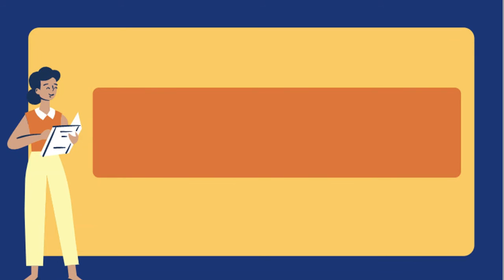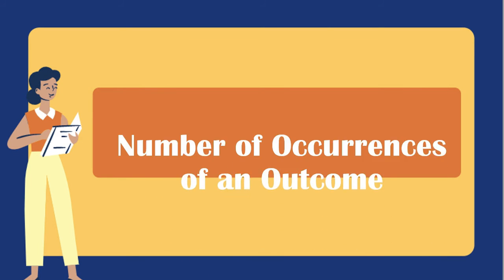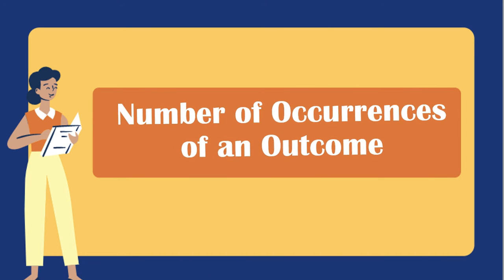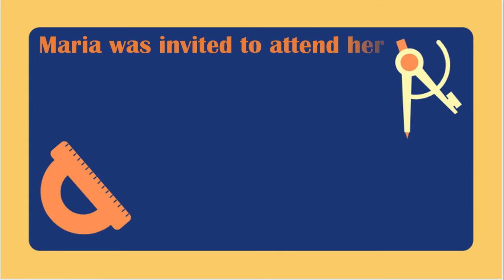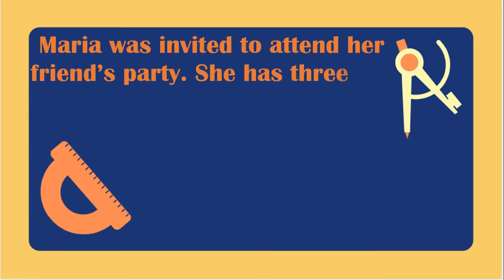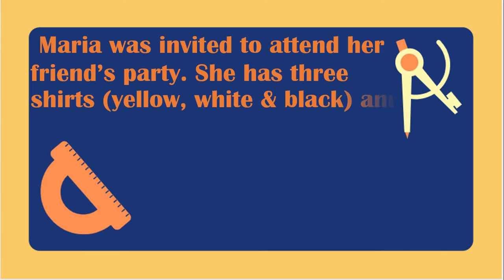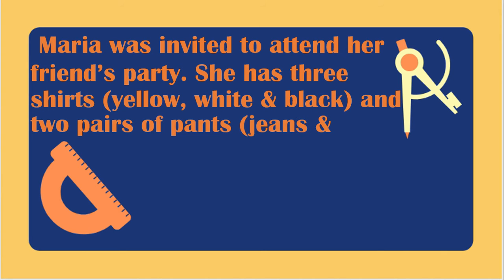This video lesson is all about counting the number of occurrences of an outcome in an experiment. We will be working on this question: Maria was invited to attend her friend's party. She has three shirts and two pairs of pants. The question is: what are the outfits Maria can choose?